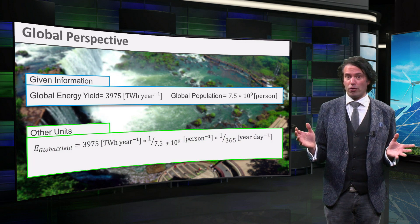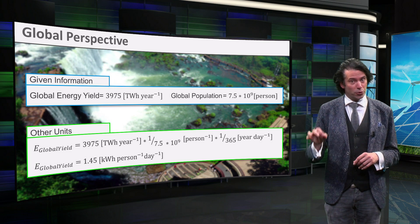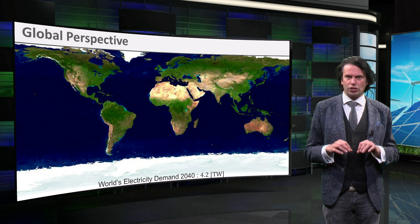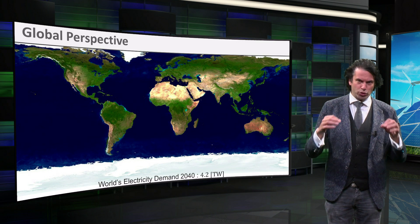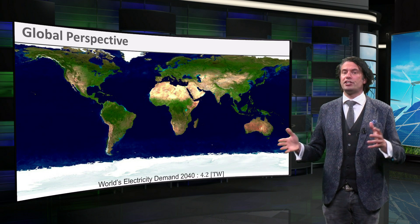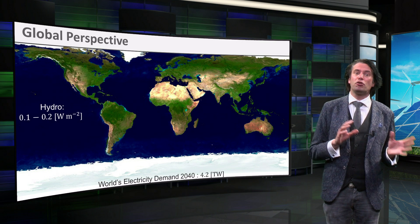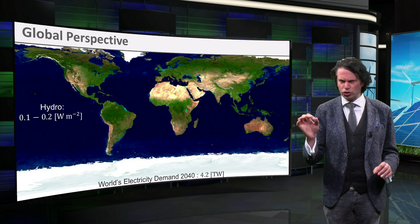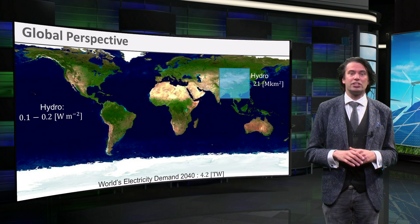If we take a population of 7.5 billion people on this planet, this results in an energy density of 1.45 kWh per person per day. It is predicted that in 2040, the global electricity demand will be equal to 42 TWh. Note this is not the total energy demand, only the electrical energy demand. With this map we can visualize what surface area is required to cover this demand with the technology discussed in each video. Hydroelectricity has a surface power density of 0.1 to 0.2 W per square meter, including the total catchment area, not just the reservoir area. Therefore, an area of 21 square megakilometers is required.